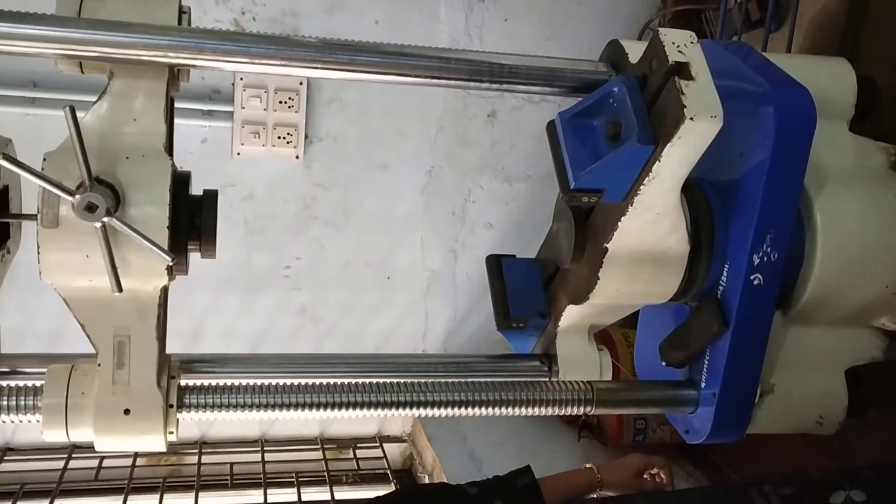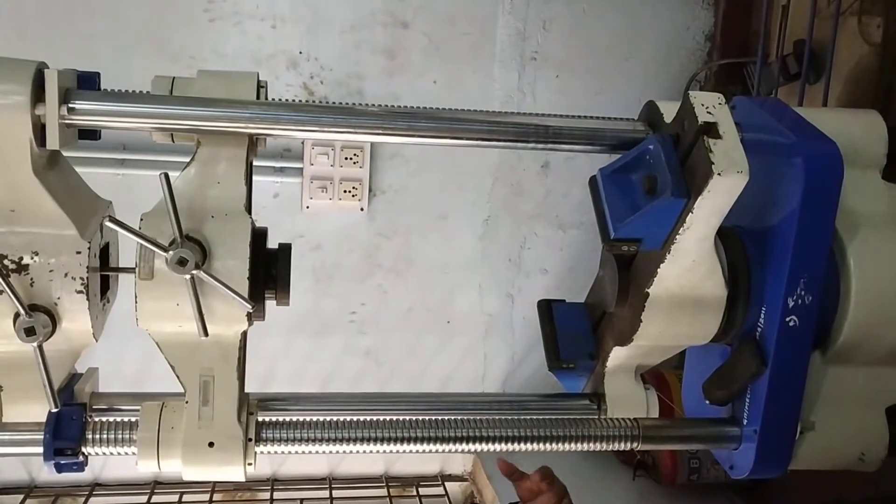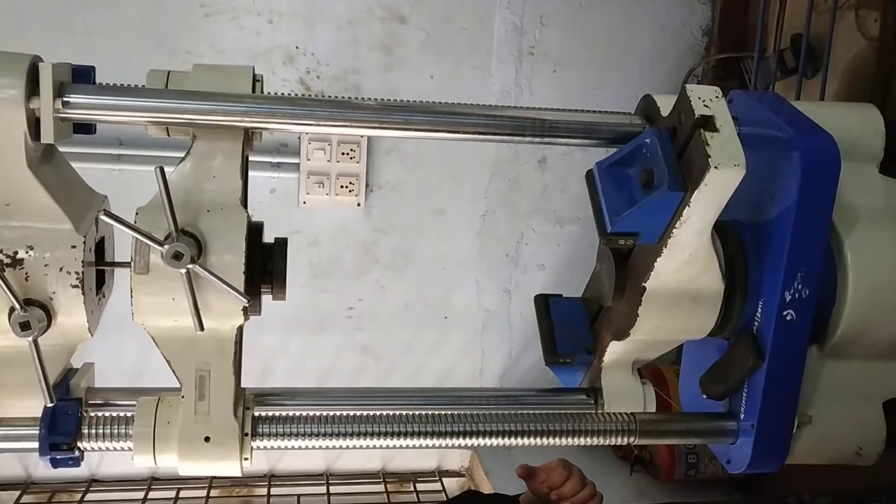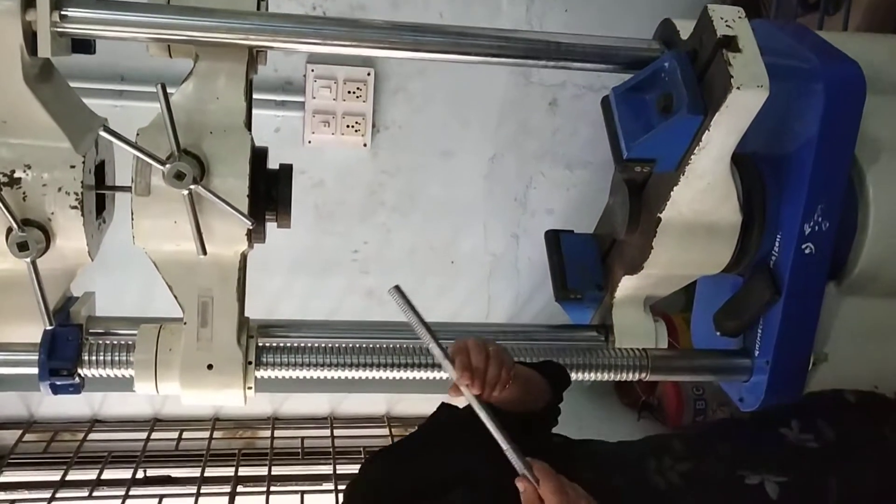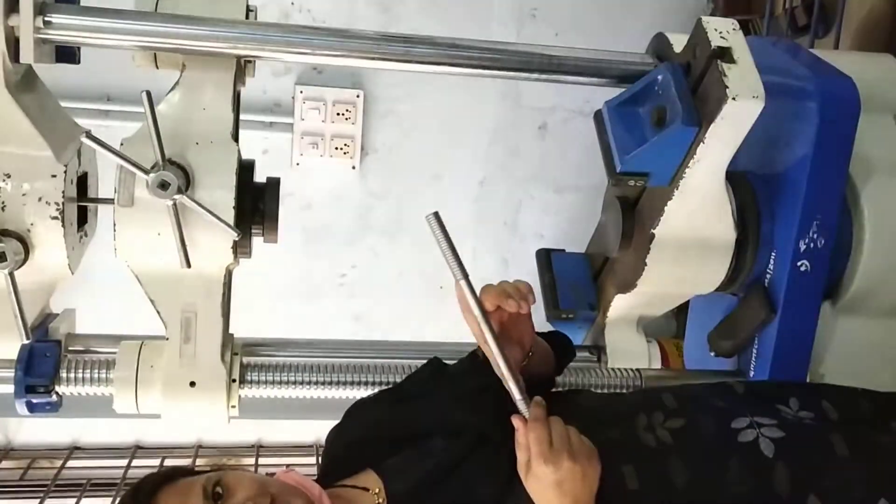This is the Universal Testing Machine because on this machine we can perform tensile test, compressive test, shear test, as well as bending test. Today we are going to perform a tensile tension test experiment on this machine. This is the specimen. The diameter of this specimen is 14mm and the gauge length is 140mm.